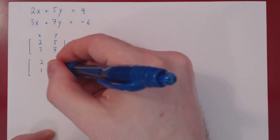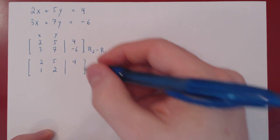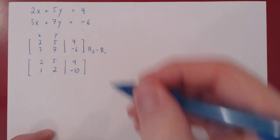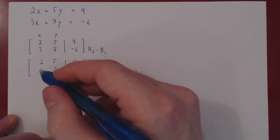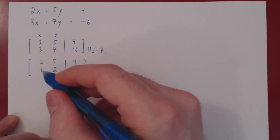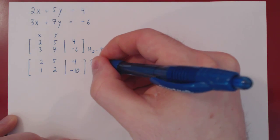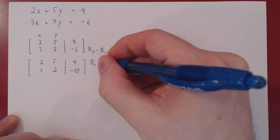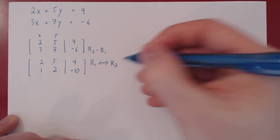Seven minus five is two. Negative six, negative four, negative ten. And now we have our leading one, but not in the top row.